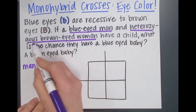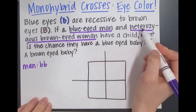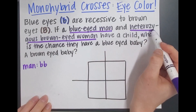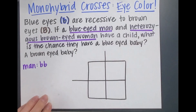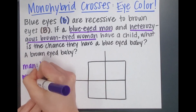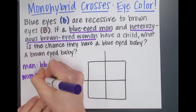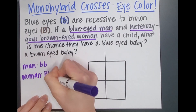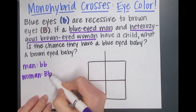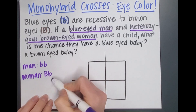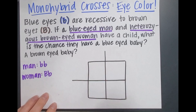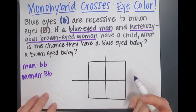The heterozygous brown-eyed woman — that gave it away already. Heterozygous means it's going to have one of each allele. So our woman is going to be big B, little b. I just like to put the capital letter first; it kind of helps my brain a little bit.